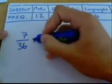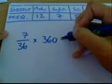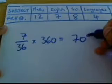Right, now we need to do it for the next subject. So, we take, again, the frequency, 7, divided by the total, which is 36, multiplied by 360. And that gives you an answer of 70.